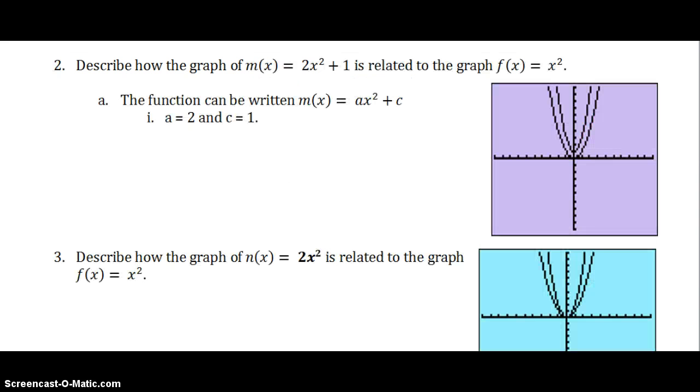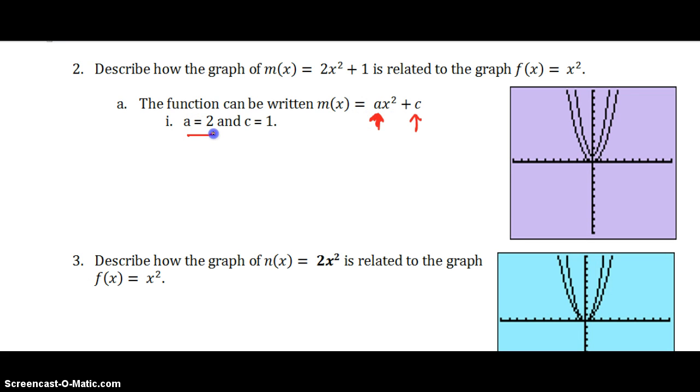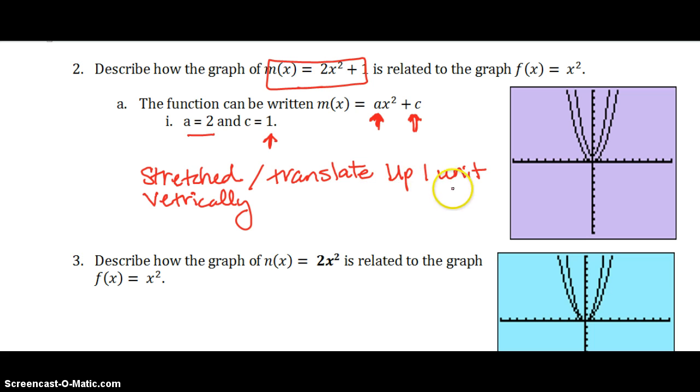So our next example on the next page says, describe how this graph, m of x equals 2x squared plus 1, how is it related to f of x equals x squared? In other words, how does it relate to the parent graph? So thinking of it in standard form, our a has a value of 2. Our c in this equation has a value of 1. So the 2, the fact that it's greater than 1, tells us that it's going to be stretched vertically. And the c being 1 tells us that it translates up 1. So that is the answer. It is stretched vertically. Vertically it got skinnier. And it translates up 1 unit.